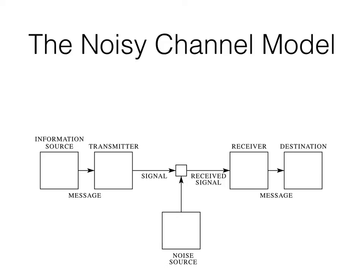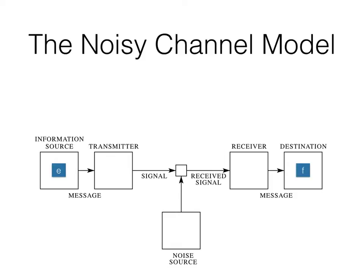Let's take a look at the components in the noisy channel model. The model begins with an information source where a text message is composed, written in a human language. Continuing the previous example, let's assume the message is written in English — we'll call that message E. The message is encoded by the transmitter from English into Morse code, sent over the channel — a telegraph wire — and decoded from Morse code back to English by the receiver. We'll call the final decoded message F.